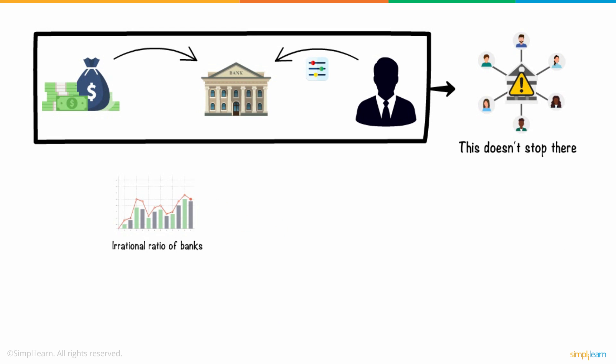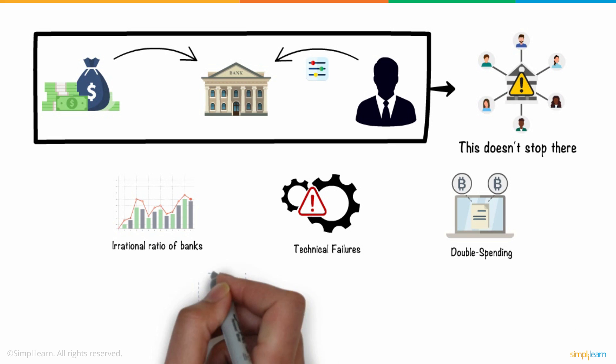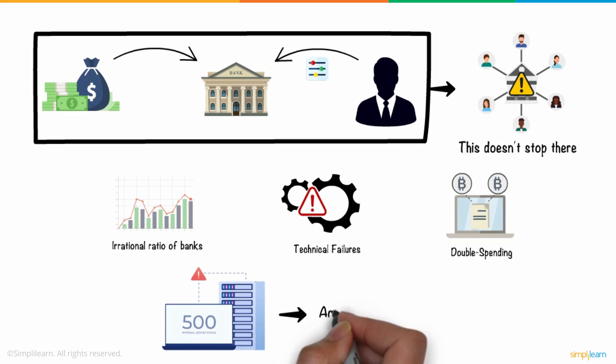Due to the irrational ratio of banks and data present, technical failures and double spending, where due to internal server issues the amount gets deducted twice became prominent issues.